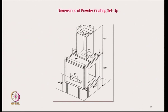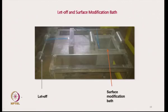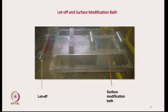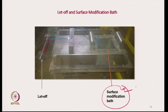Now if we see the dimensions of the system — this is the entry point, this is the hot air oven, and this is the coating chamber. Now let us see each individual component from the back side of the instrument. This is the let-off system where the carbon tow package is placed; a centering device is there, and here is a surface modification bath.